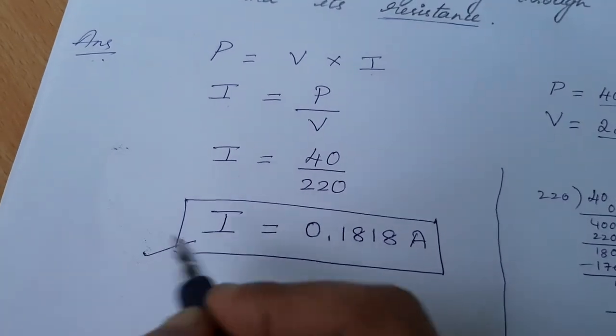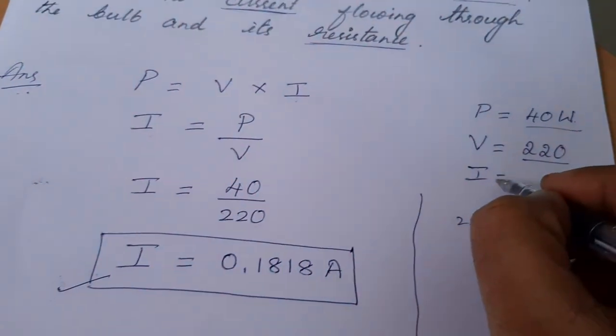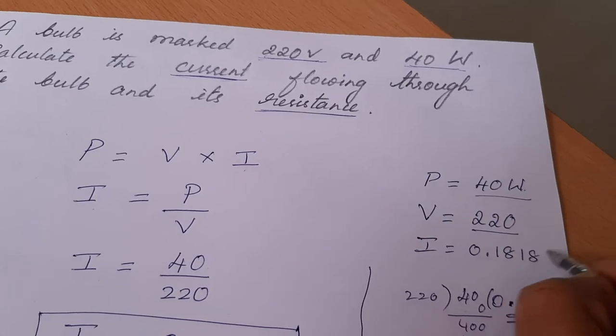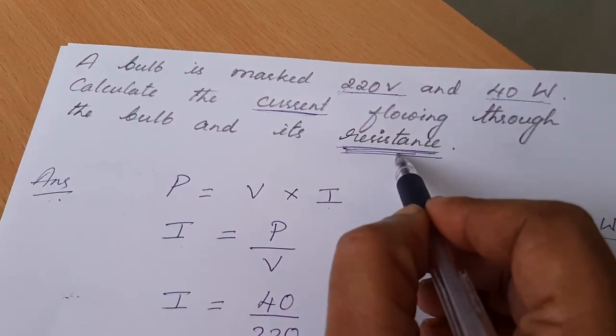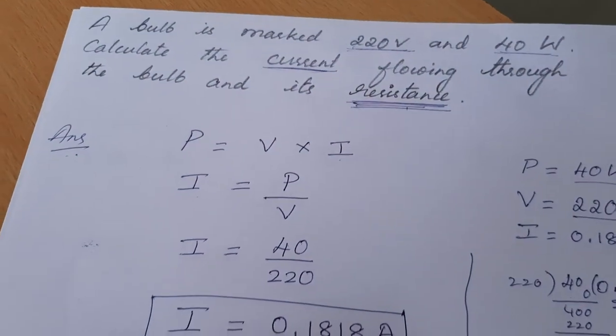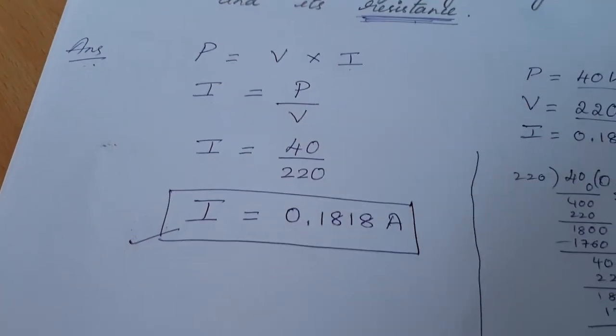I is 0.1818 Ampere. So now I have got current. Now I have to calculate resistance.